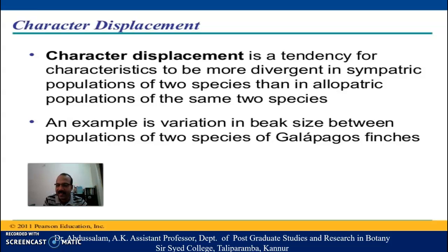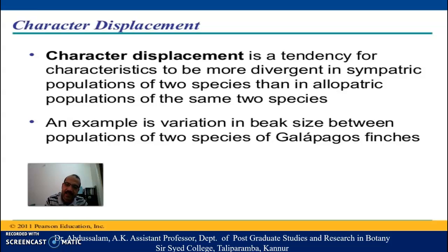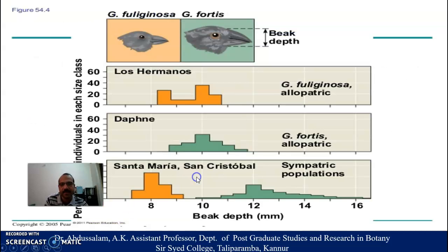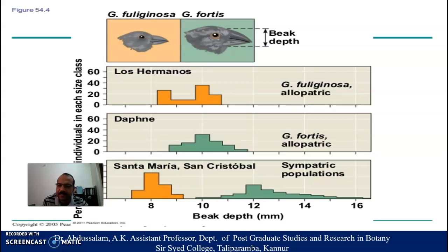The beak variation in Galápagos finches is a classic 1959 example of character displacement. The genus is Geospiza. We can see the depth of the beak varying depending upon their character and their activity for taking food from other organisms. That is what is called character displacement.